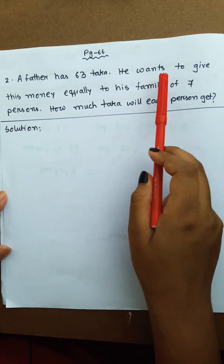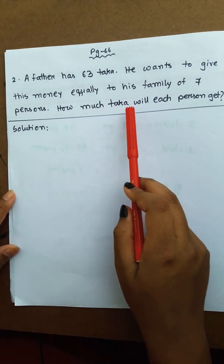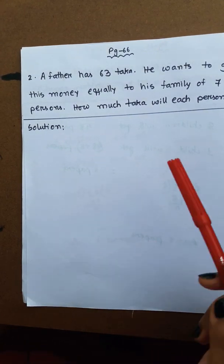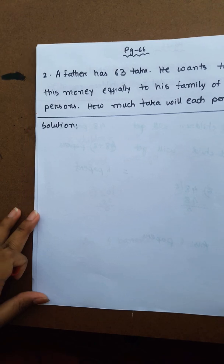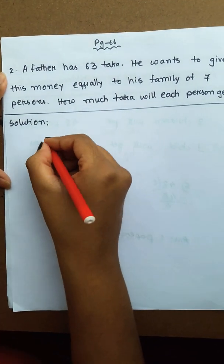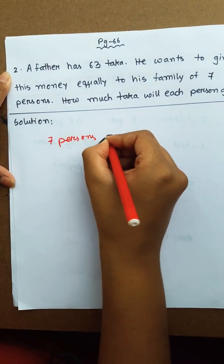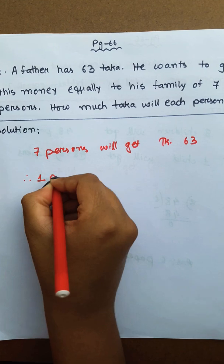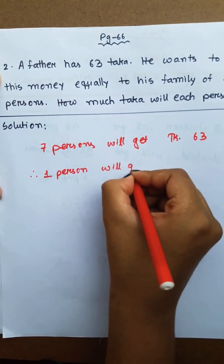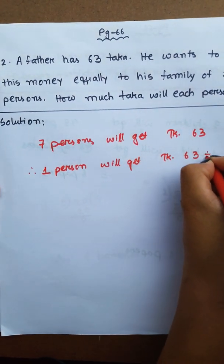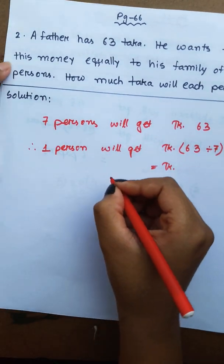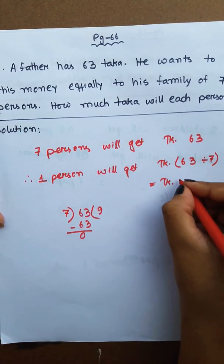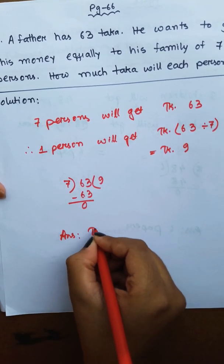A father has 63 taka. He wants to give this money equally to his family of seven persons. How much taka will each person get? Seven persons will get taka 63. Therefore, one person will get taka 63 divided by seven. We know nine sevens are sixty-three. Therefore, answer is taka 9.